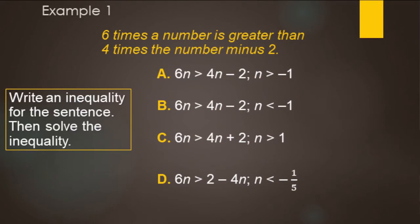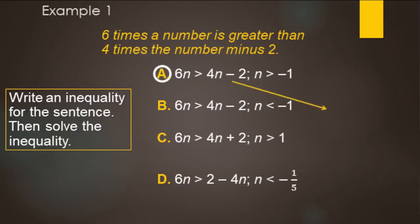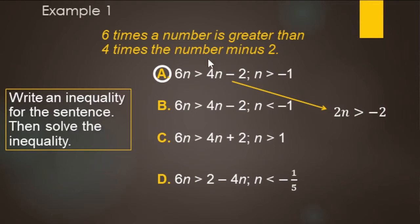Now let's try this one — pause the video and come on back. We're writing an inequality for: six times a number is greater than four times the number minus two. So it's going to be one of these two answer choices. Six times the number is greater than four times the number minus two. The correct answer is A. If you solve it: subtract 4n from both sides to get 2n > −2, then divide by two — n is greater than negative one, which matches answer A.